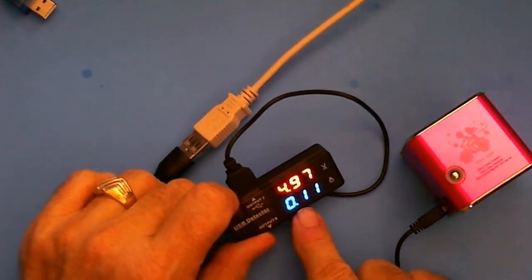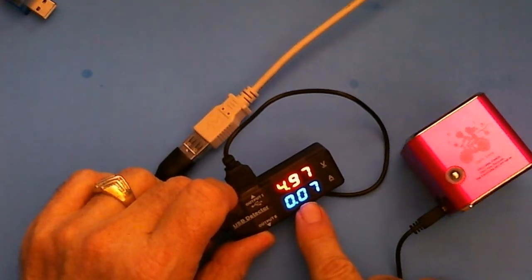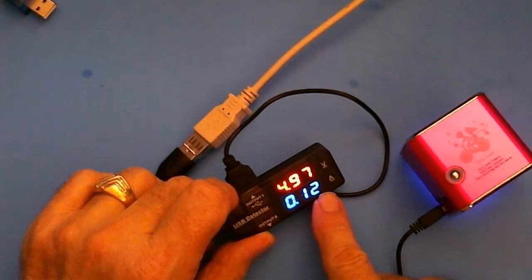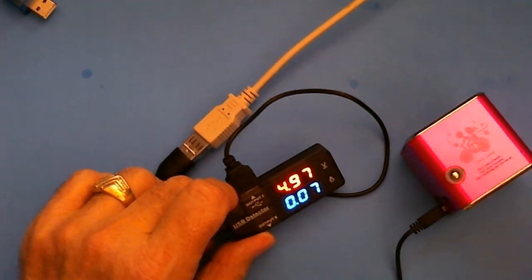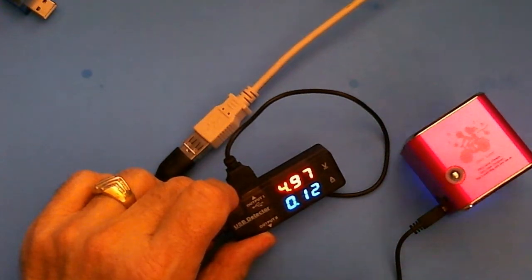I don't know if that's an indication that it's pulsing, you know, giving a slug of current and then backing off, giving a slug of current. But you can see it's toggling between 0.12 and now it's not going to toggle, oh there it is, to 0.07. So I don't know what's causing that phenomenon.